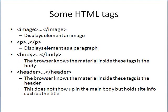Here are some tags that are often used in HTML. The first is the image tag — it is used to display an image. Next is the paragraph tag; content written between these tags will show up as a paragraph on the final website. Things written between the body tags tell the browser that material inside is the body of the website and is not to be included in the title or header. The header tags tell the browser that material within them is used for the header and the title and is not to be put into the main body of the website.